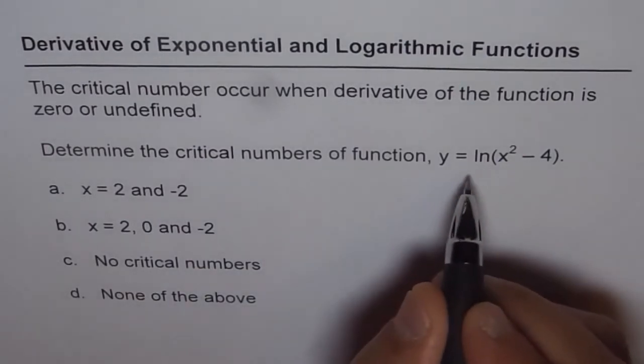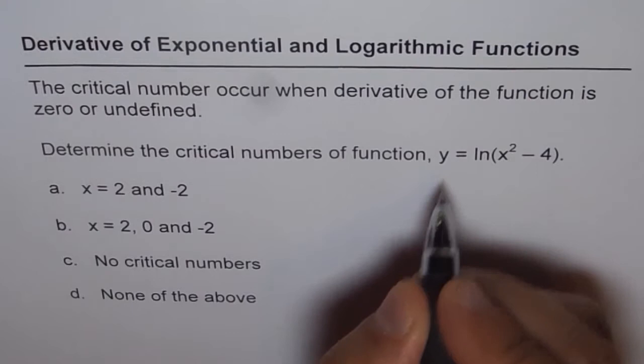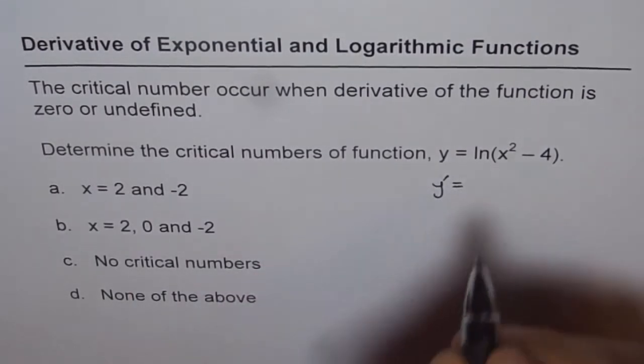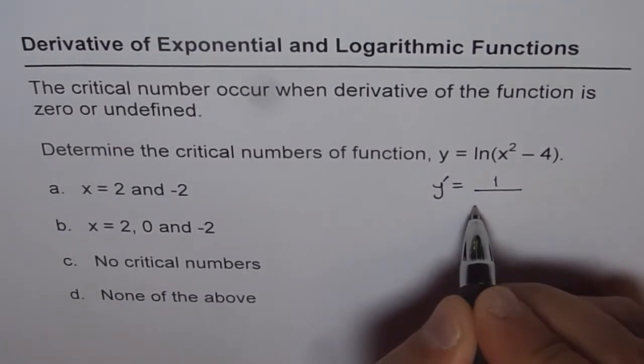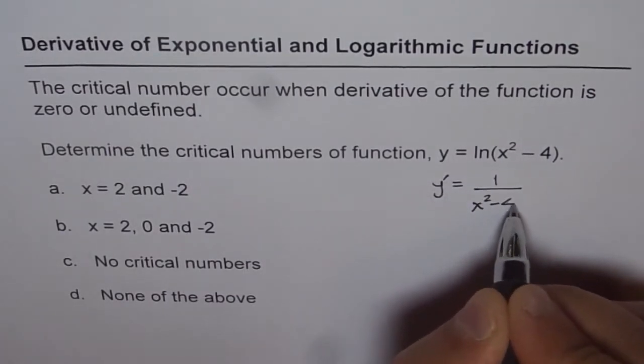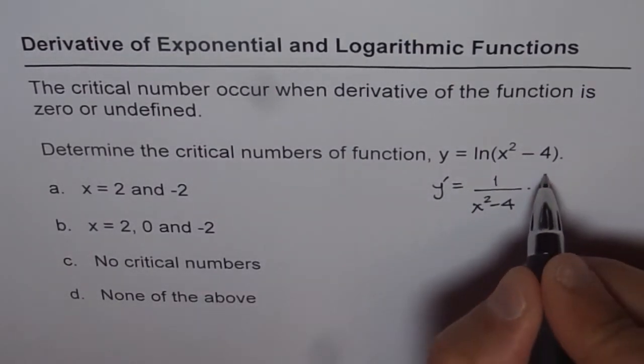We have y equals ln(x² - 4). The first derivative y' equals 1 over (x² - 4) times the derivative of the function, which is 2x.